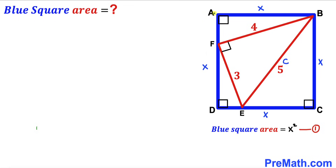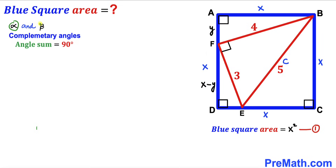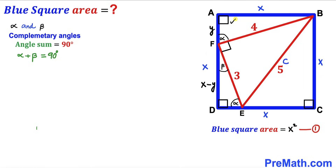Next, let's assume segment AF is lowercase y. We know the whole side length AD is X, so the remaining segment FD is X minus y. Now let's assume alpha and beta are two complementary angles, meaning alpha plus beta equals 90 degrees. In triangle BAF, one angle is 90 degrees and one angle is alpha, so the third angle must be beta. In triangle FDE, one angle is 90 degrees and one is alpha, so the other must be beta.